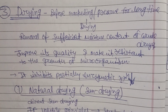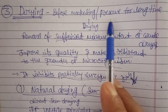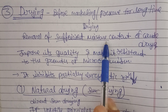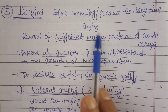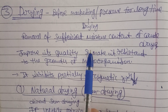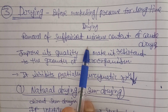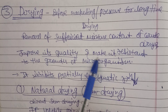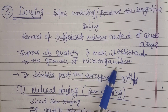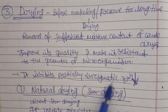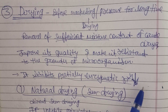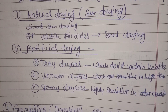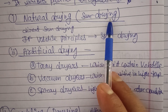After collecting, drying is the next very important step before marketing or preservation. Drying removes sufficient moisture content from crude drugs. Moisture must be removed, otherwise fungal growth will start, causing loss of active constituents and making the drug unsellable. Proper removal of moisture content maintains the quality of the drug.